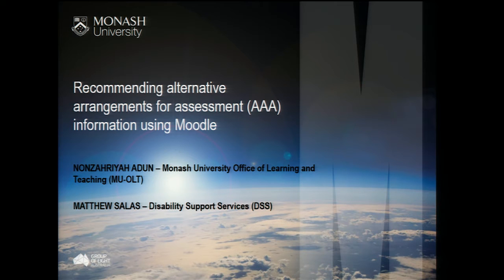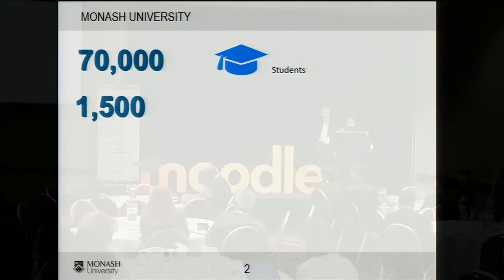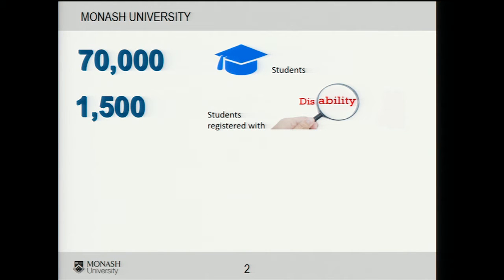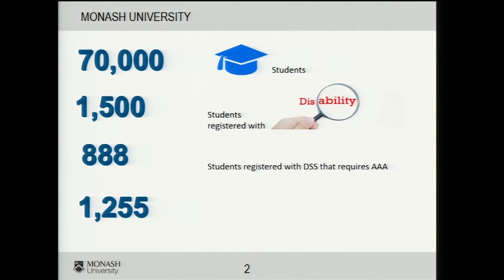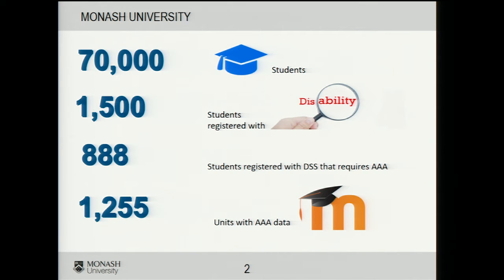Assessment can be anything from online quizzes to class tests to an assignment. At Monash University, we have about 70,000 students enrolled. 1,500 of those students are registered with disability support services, and 888 of those require AAA in Moodle. There are about 1,255 units with AAA data in Moodle, and the staff who could access those units were about 4,000 teaching staff.